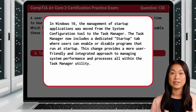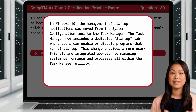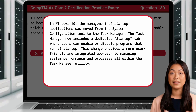In Windows 10, the management of startup applications was moved from the System Configuration tool to the Task Manager. The Task Manager now includes a dedicated startup tab where users can enable or disable programs that run at startup. This provides a more user-friendly and integrated approach to managing system performance and processes all within the Task Manager utility.